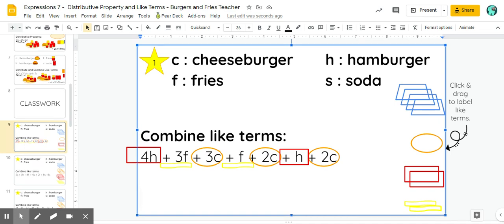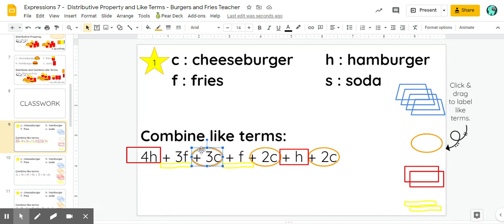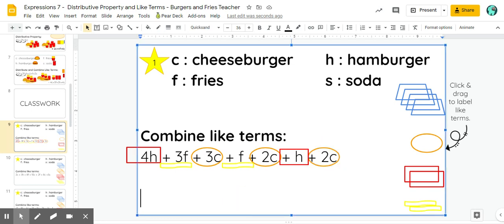So I'm going to start with my cheeseburgers first because I want my answer to be in alphabetical order. So I have three cheeseburgers plus two cheeseburgers, which is five cheeseburgers, plus two more, which is seven cheeseburgers.